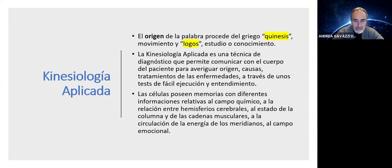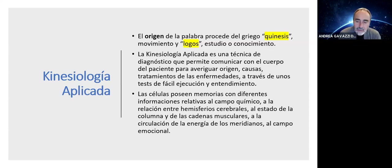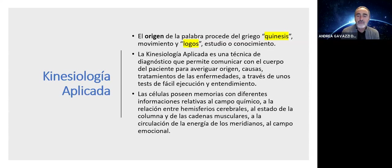Una explicación es que las células de nuestro cuerpo poseen memoria con diferente información: son las que viven en el cuerpo, las que saben lo que es bueno y malo para él. Esta información es química, emocional, de hemisferio, columna, cadena muscular, circulación de la energía, meridiano, campo emocional, todo. Según una de las teorías de cómo funciona la kinesiología, la respuesta del cuerpo es inconsciente: yo hago una pregunta mental y el cuerpo da una respuesta sin que la persona haya escuchado nada.